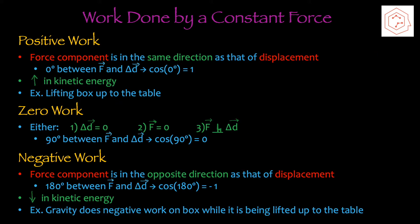Positive work is done when the force component is in the same direction as that of the displacement. An example of positive work is when there's zero degrees between force and displacement, so cos of zero degrees would just be 1. Positive work increases kinetic energy. An example is when you lift a box up to the table — both the applied force and the displacement are in the upwards direction.